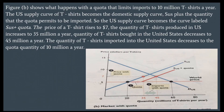Figure B shows what happens with a quota that limits imports to 10 million T-shirts a year. The U.S. supply curve of T-shirts becomes the domestic supply curve plus the quantity the quota permits to be imported — labeled S-U.S. plus quota. The price of a T-shirt rises to $7. The quantity produced in the U.S. increases to 35 million a year. The quantity bought in the United States decreases to 45 million a year, and imports decrease to the quota quantity of 10 million a year.